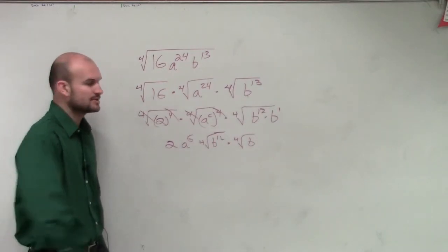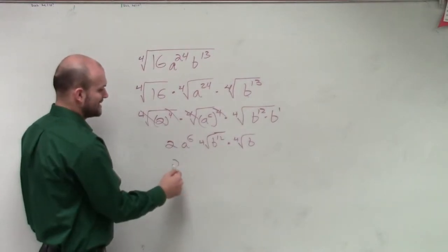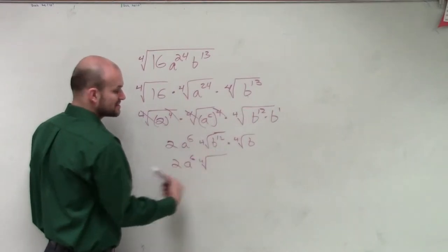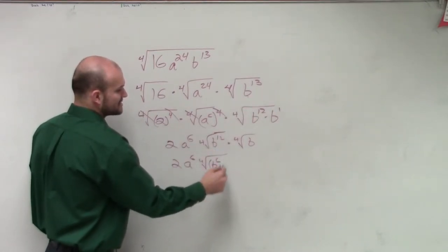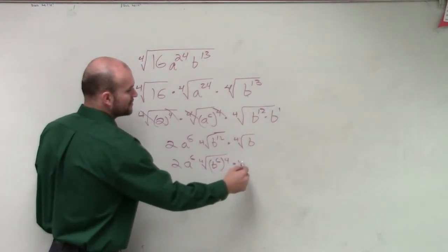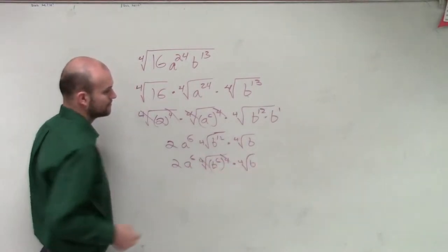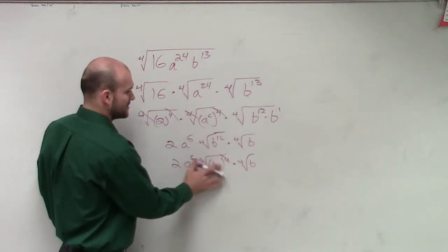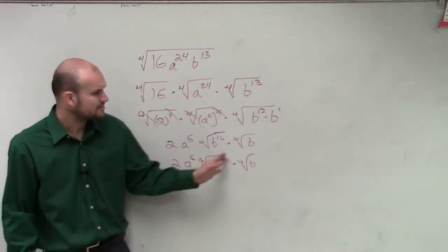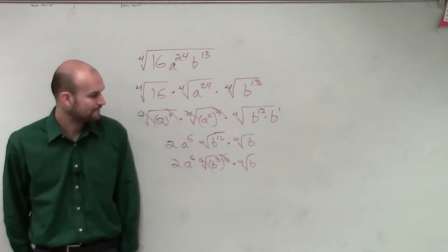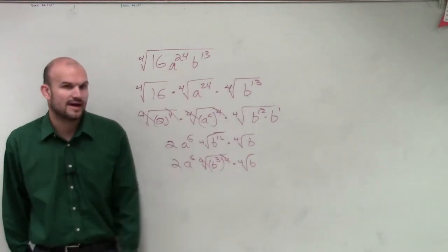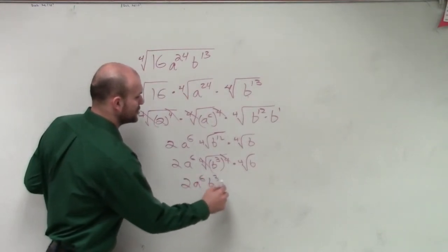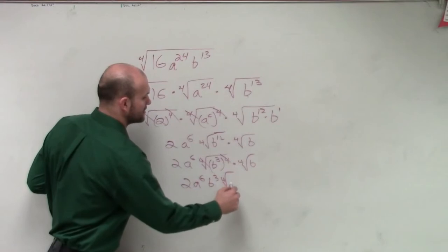We've got to simplify this. We can rewrite b to the 12th as b to the 3rd to the fourth power. So the fourth root of b to the 3rd to the fourth, times the fourth root of b. Therefore, we say 2a to the 6th, b cubed, times the fourth root of b. That's our final simplified answer.